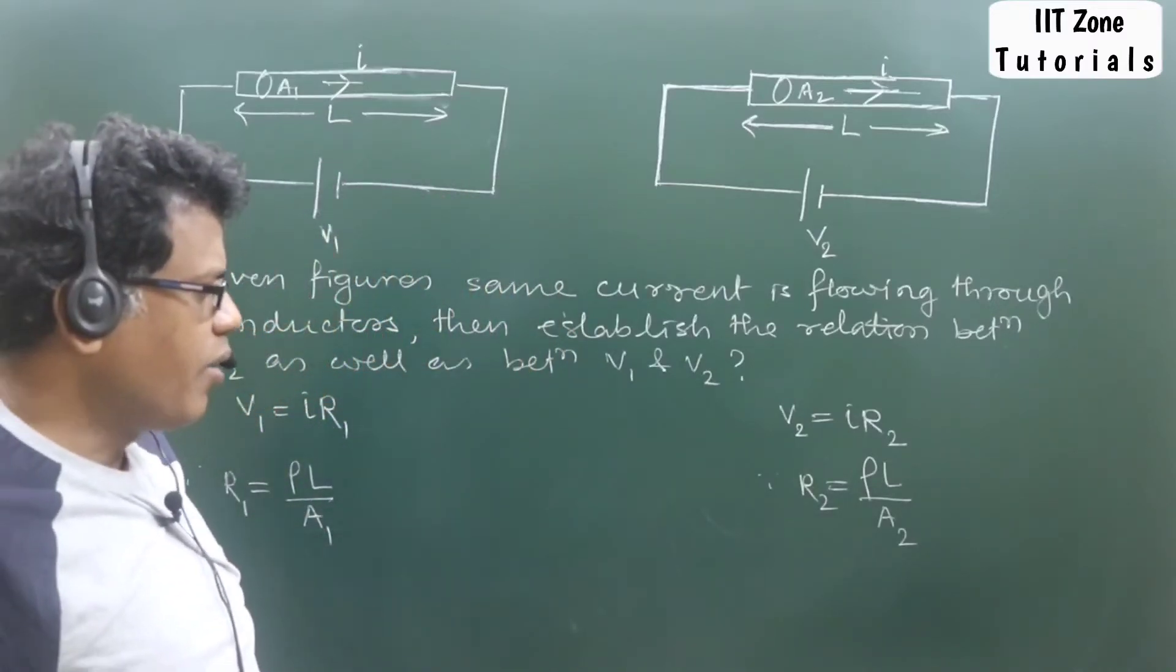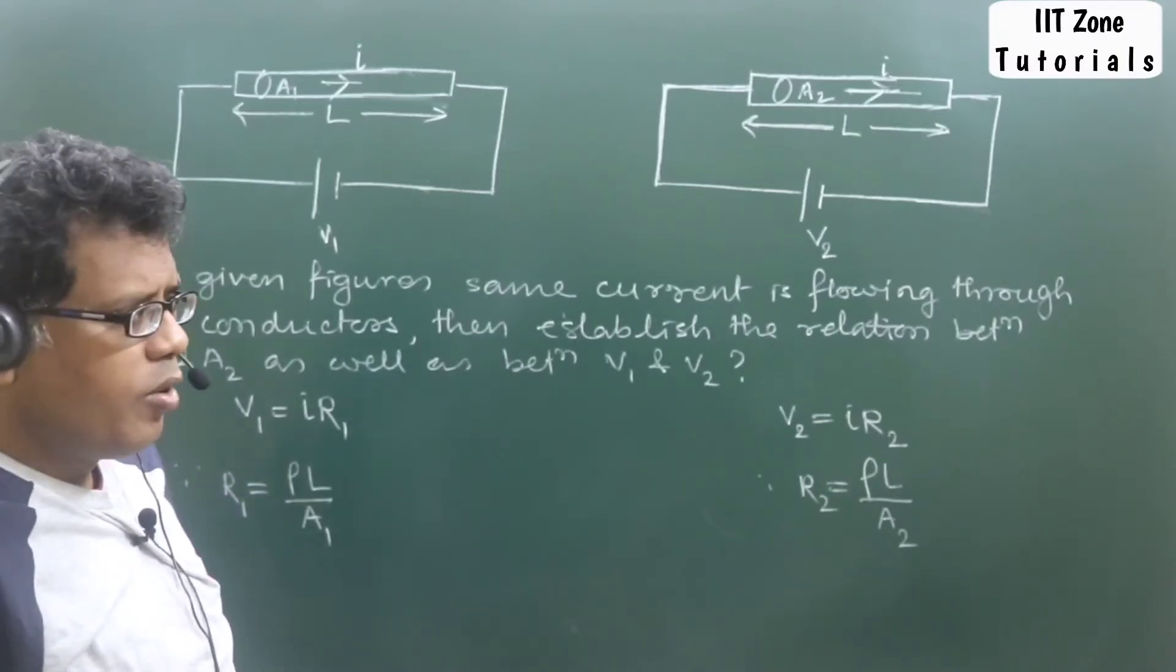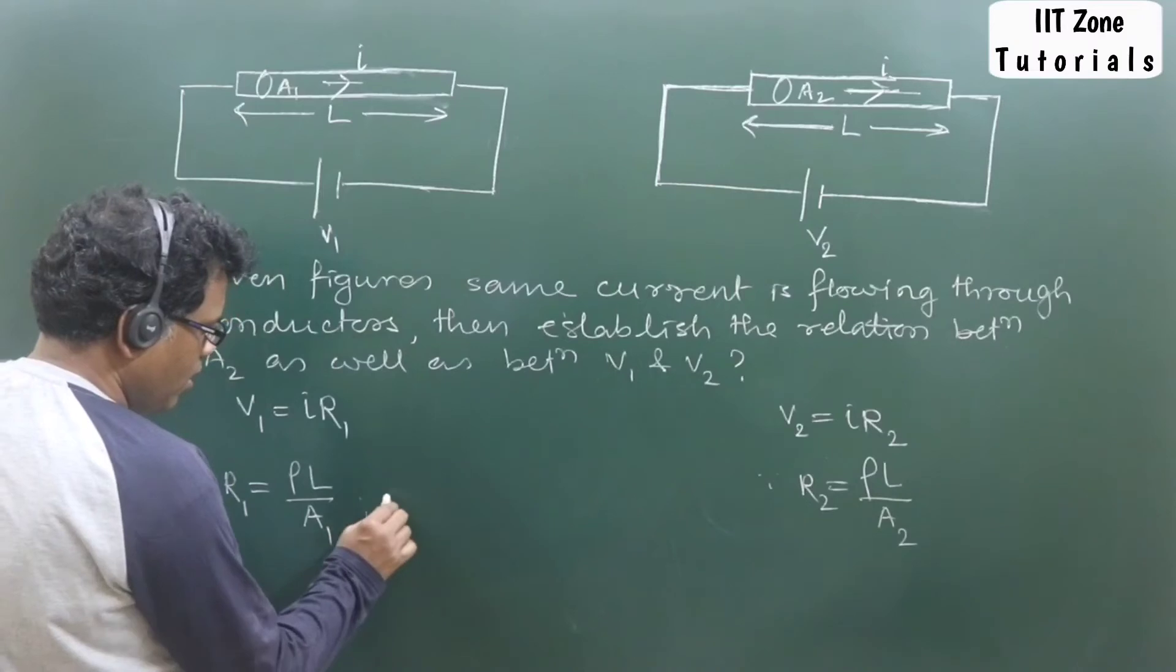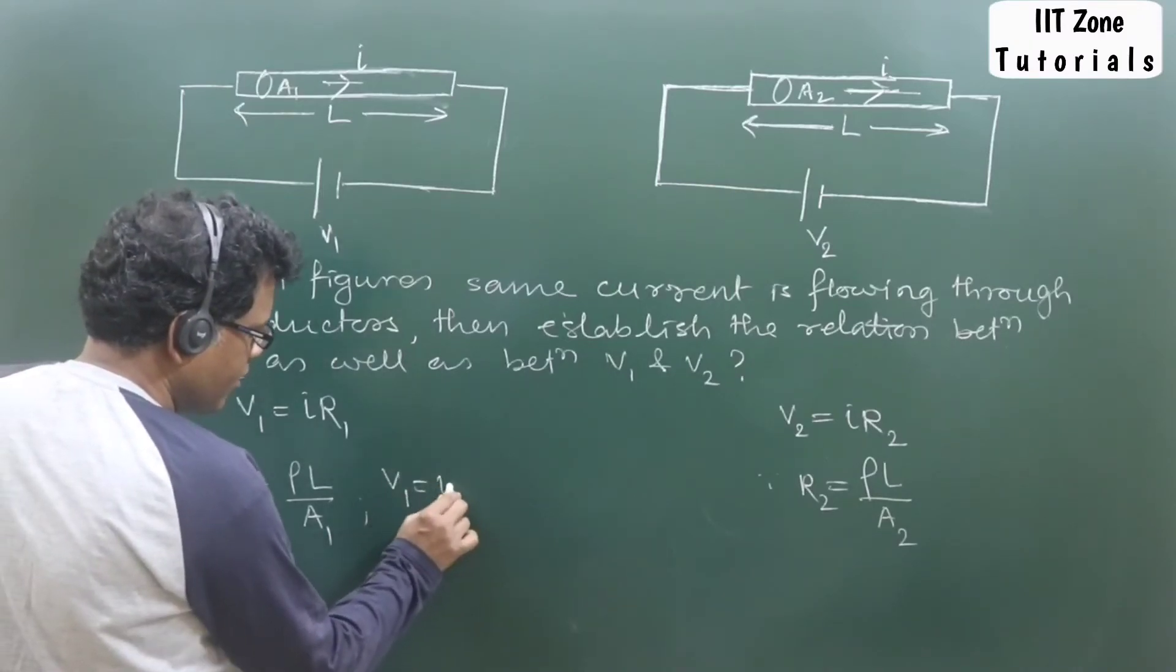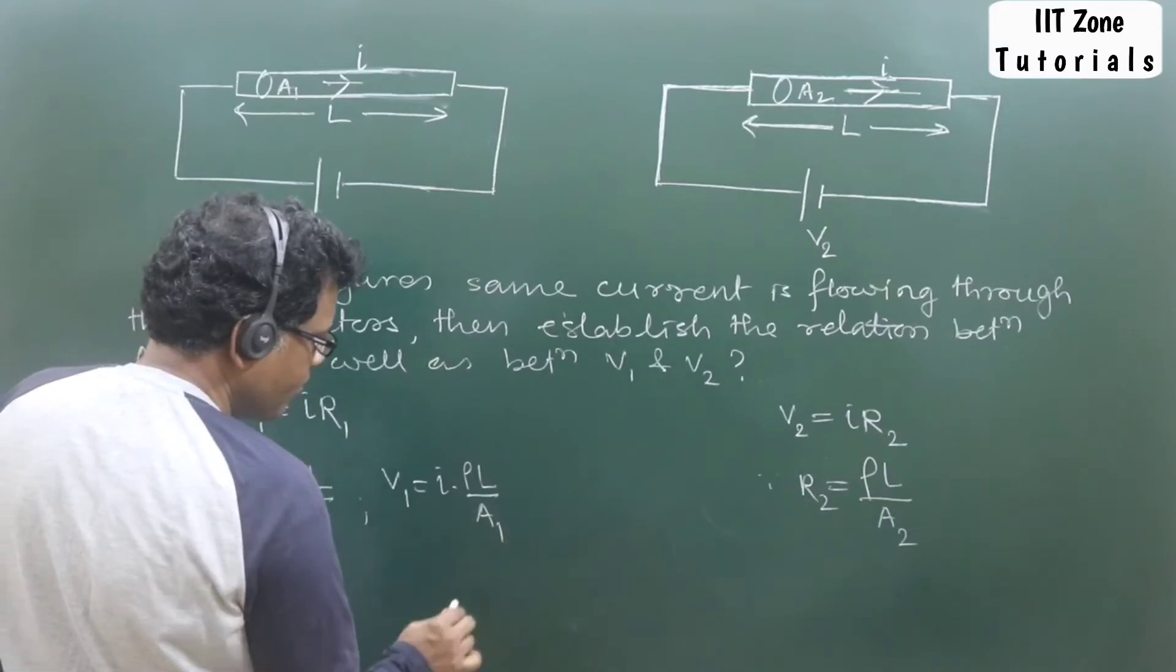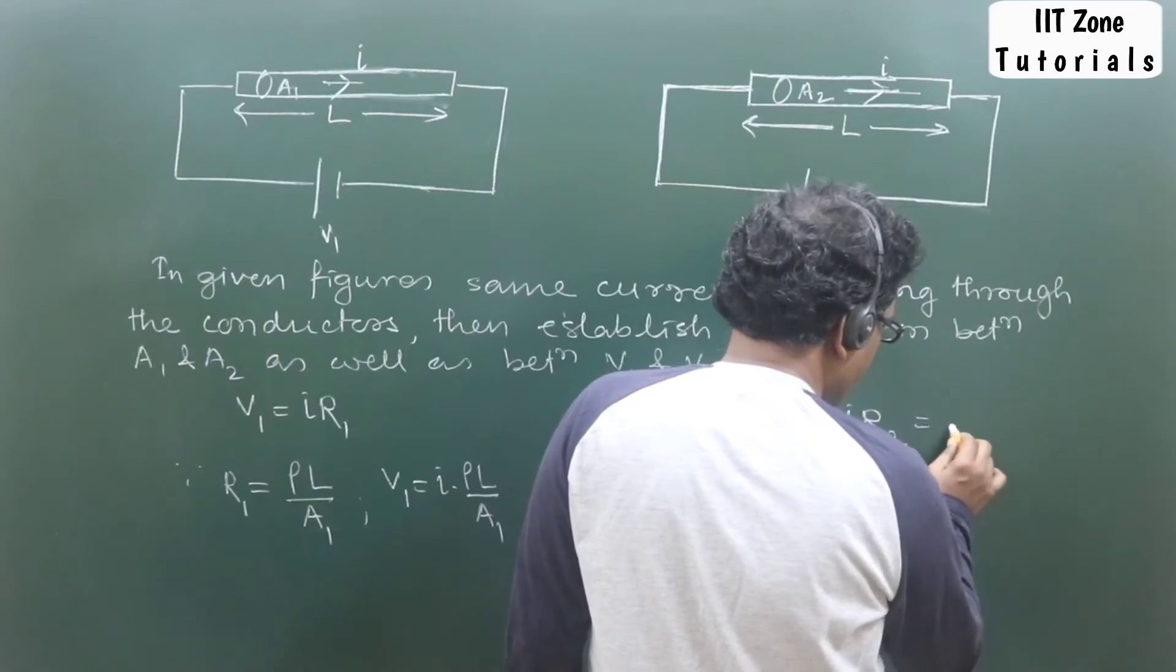So now, instead of R1 and R2, if we substitute this formula value of ρL/A, then I can write down V1 is equal to I into ρL/A1, isn't it? And here I can write down V2 is equal to I into ρL/A2.